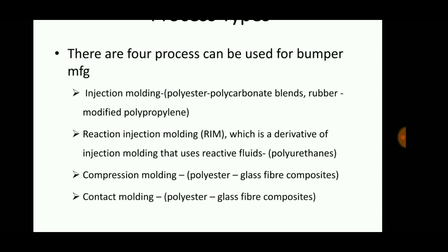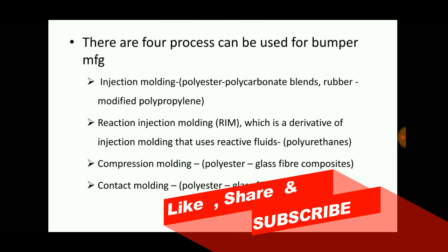In the injection molding process, polystyrene beads are made in the form of a bumper shape, then coated with resin so that molten metal can be poured in. The polystyrene beads melt and flow out, and the molten metal solidifies — finally the shape of the bumper is obtained.